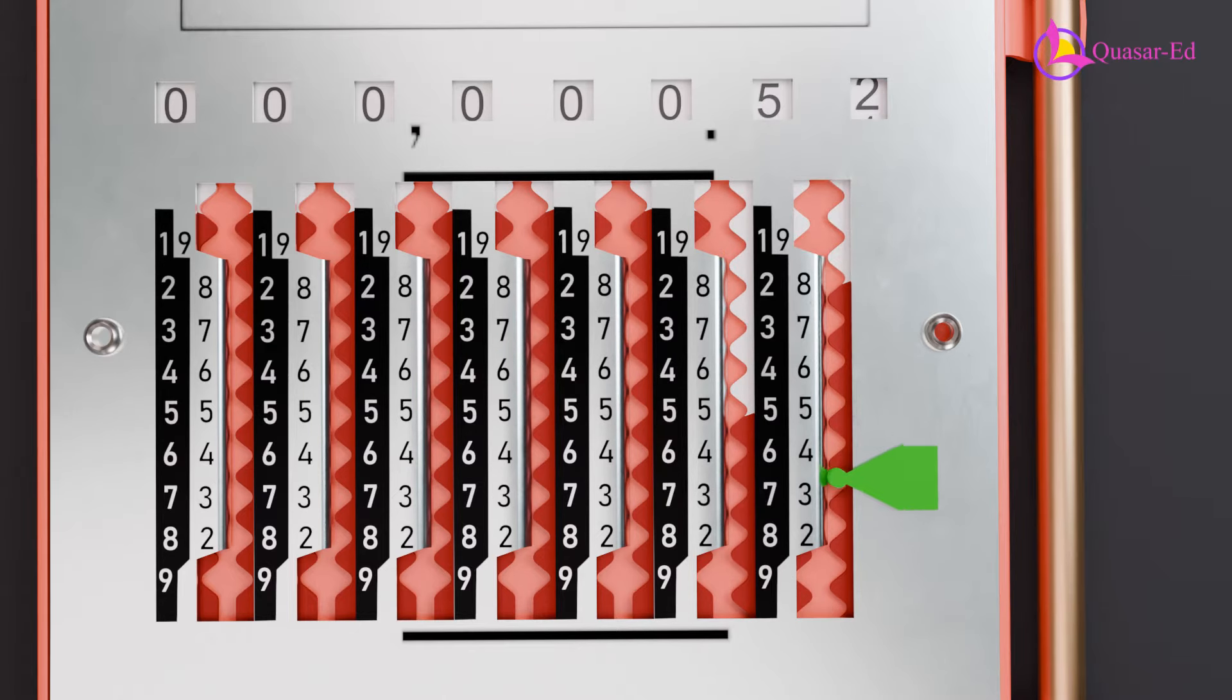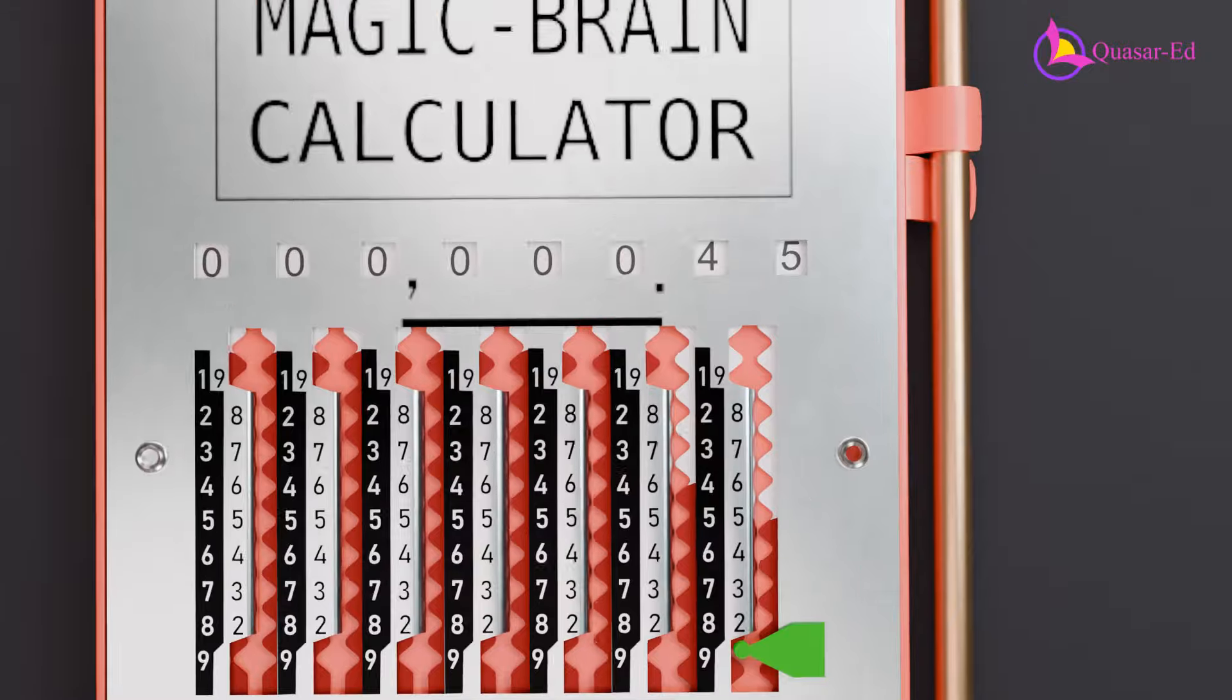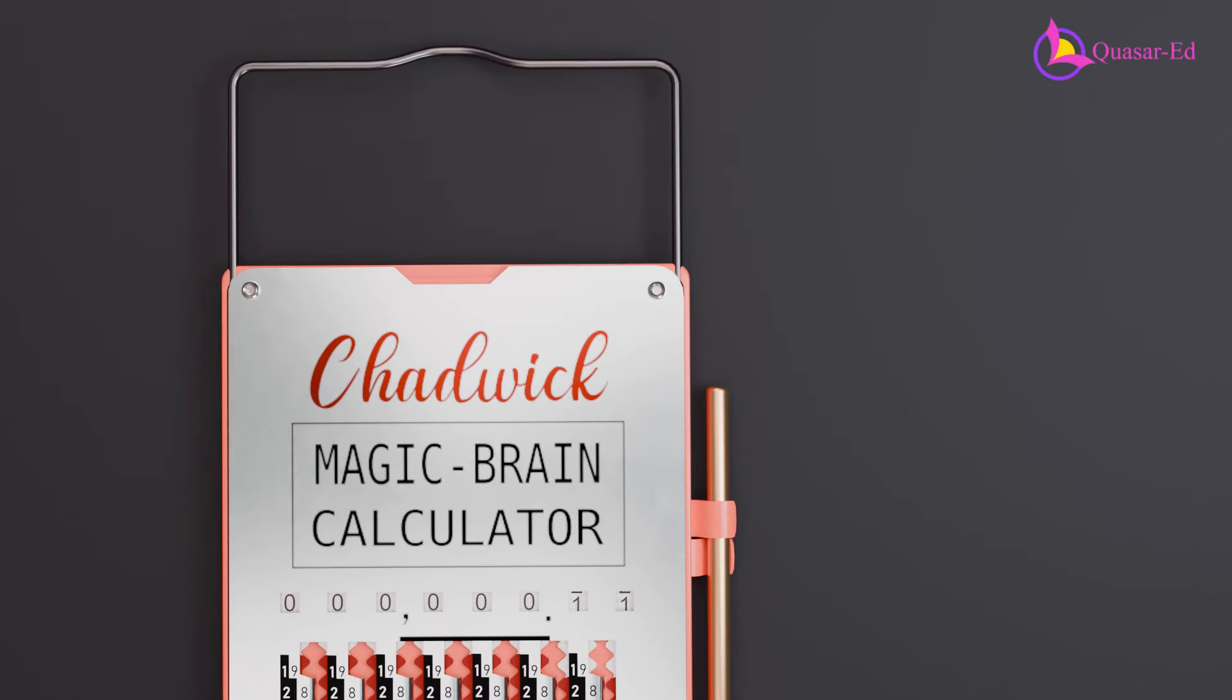For borrowing during subtraction, the red section must move all the way down, shift to the left, and then pull one up. These simple rules make the calculator easy to use.